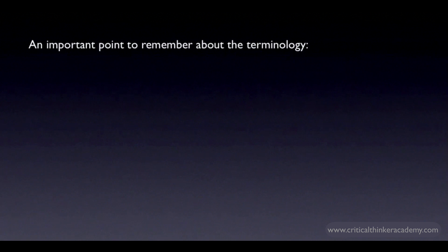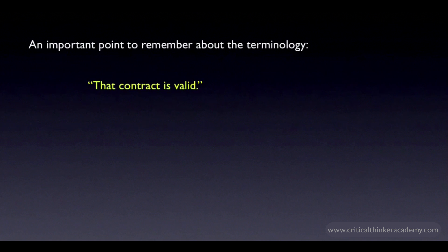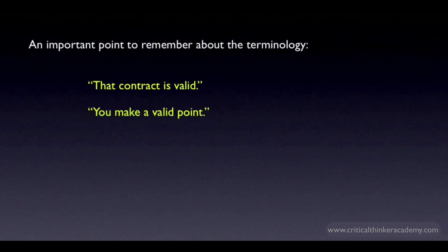A cautionary note about this terminology: we're using the terms valid and invalid in a very specific technical sense that is commonly used in logic and philosophy, but not so common outside these fields. In ordinary language, the word valid is used in different ways — like when we say a contract is valid, meaning it's legally legitimate, or when we say you make a valid point, meaning the point is relevant or has justification behind it. These are perfectly acceptable uses of the term, but this isn't how we're using the term in logic when doing argument analysis. It's important to keep the various meanings of valid and invalid distinct so there's no confusion.